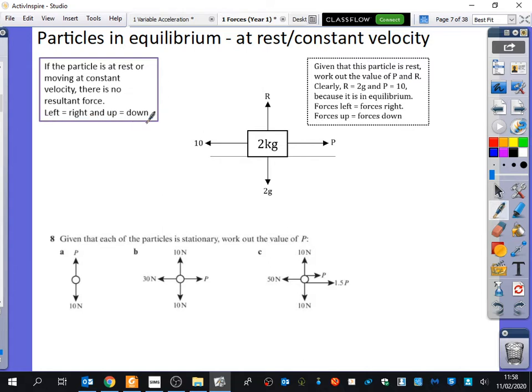So I've written here, if the particle is at rest or moving at constant velocity, there is no resultant force. So instead of saying that P minus 10 equals zero, we can just clearly say if there's no overall resultant force, that one must be equal to that one. Left must be equal to right and up must be equal to down.